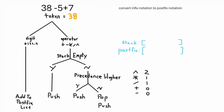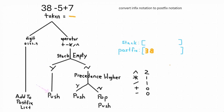Let us convert this infix notation to postfix. We parse the expression and get 38. We assign it to token and do a test: is this a digit or an operator? This is a digit, so we add it to the postfix list. Our next token is the minus symbol — is it a digit or an operator? That's an operator. Is the stack empty? Yes — add minus to the stack.